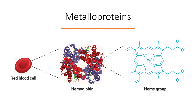Metalloproteins are proteins that have a metal ion attached as a cofactor. An example of a metalloprotein is hemoglobin. Hemoglobin has iron attached to it in the form of a heme group to carry oxygen. Because the binding of iron to the protein changes the color of the protein, hemoglobin is also referred to as a chromoprotein.